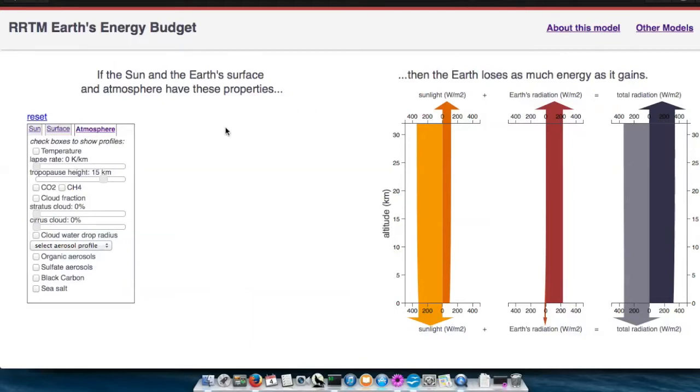You can change and look up the properties of your planet on the left, and you can observe the resulting energy flows on the right.